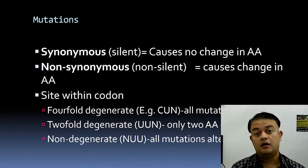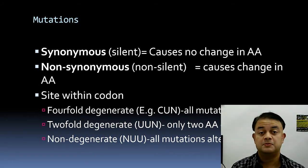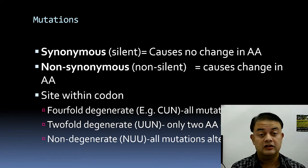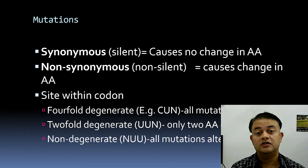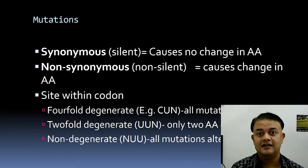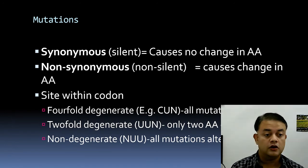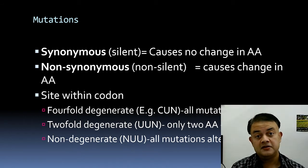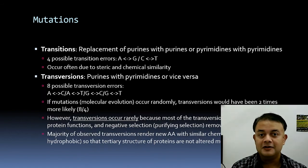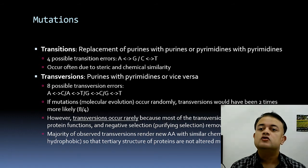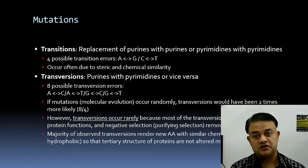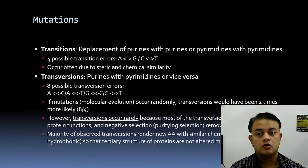Har Gobind Khorana, a Punjabi Nobel laureate who received his prize in the US, is the person who discovered the triplet codon and cracked the genetic code, for which he was awarded the Nobel Prize.